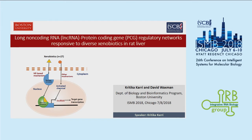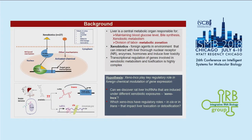Rat has been a well-known model organism for xenobiotic-based studies, and that is why we are using rat here. Our group focuses on liver, depending on liver-based diseases and hepatic cancer. As we know, liver is a central organ for metabolism — it's involved in maintaining blood glucose level, xenobiotic metabolism, and biosynthesis. There is an interesting phenomenon in liver where gene expression profiles in the same cell type across different zones differ, known as metabolic zonation.